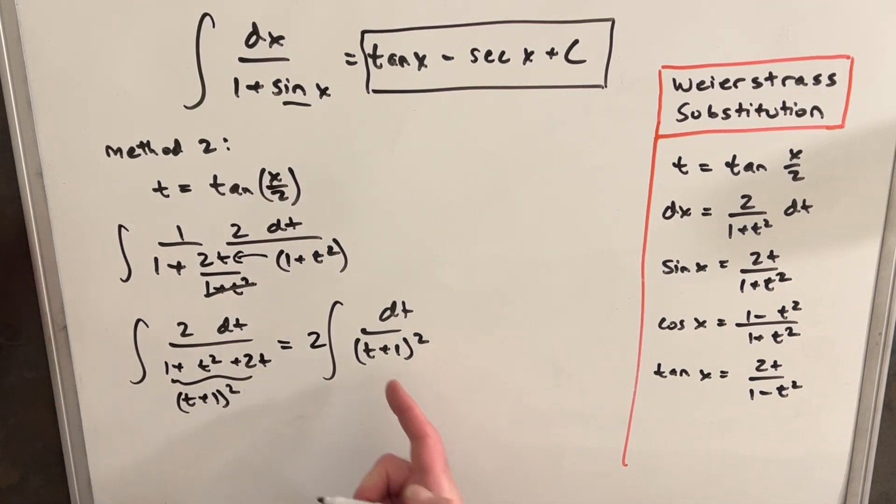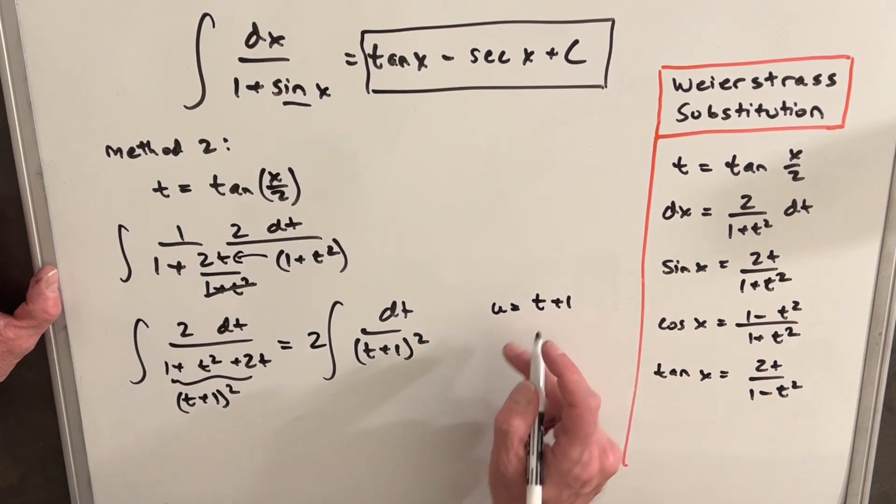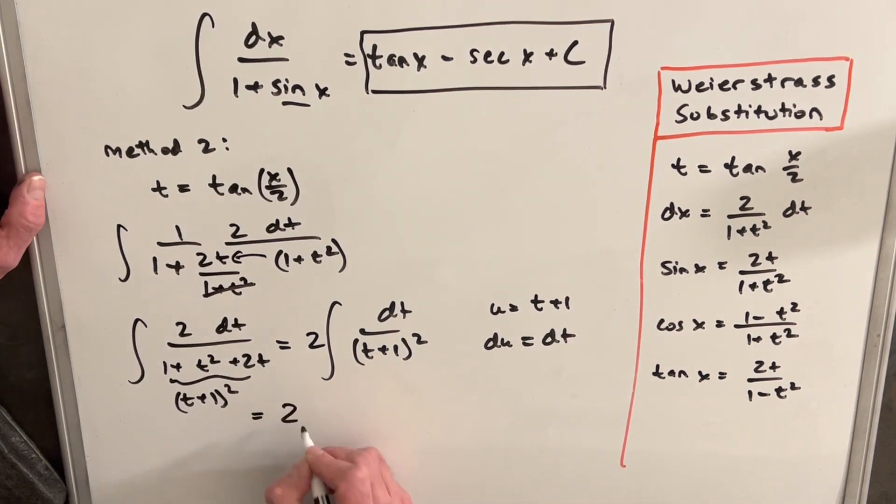Now you probably can do this u substitution in your head, but I'm just going to do it just so it's clear for everyone to see what I'm doing. So we're going to say u is t plus one, and then that means our du is dt. So then rewriting this, we have two, the integral of, now this thing's u, but let's write it in the numerator as u to the minus two du.